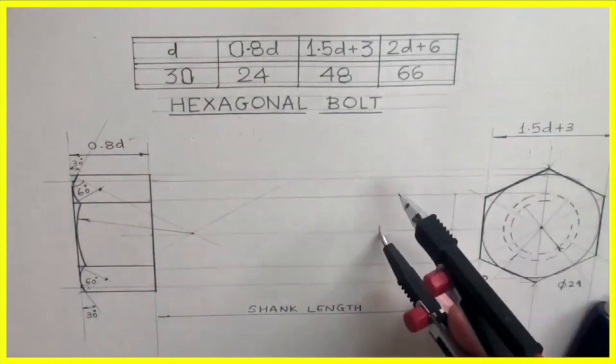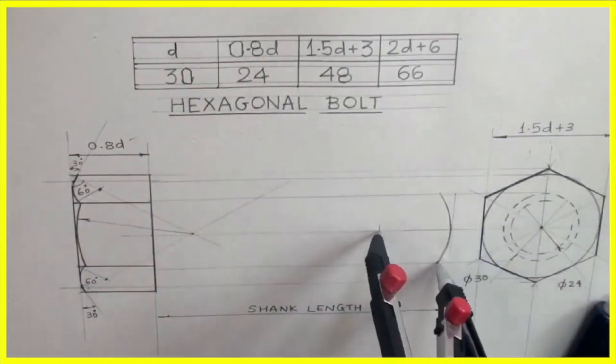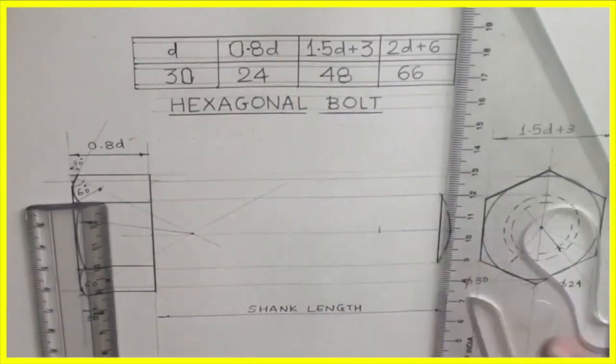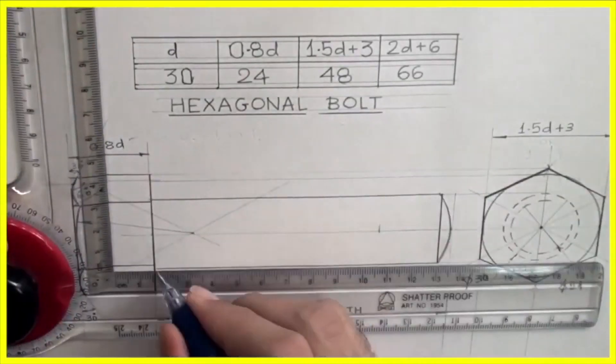We take D from here and from here we will draw radius 30, that is D. We will draw this line. This will be dark.